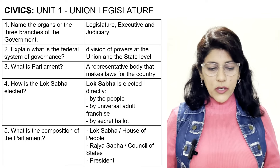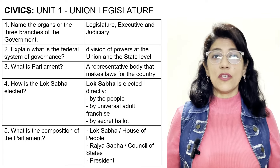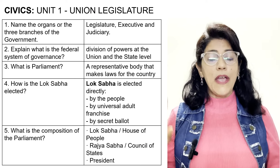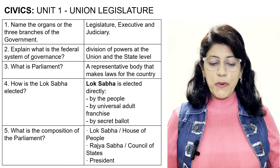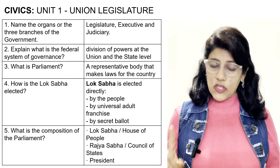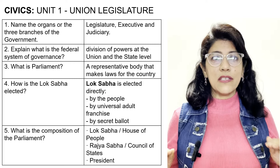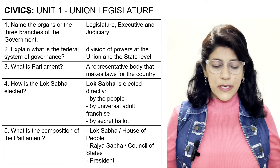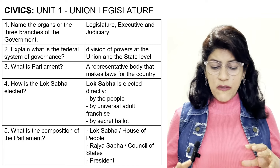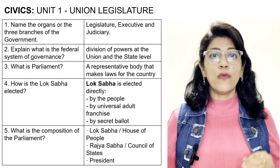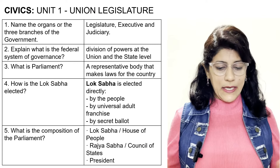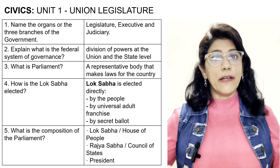First question: name the organs or three branches of the government — Legislature, Executive, and Judiciary. Next, explain the federal system of governance — division of power at the union and the state level, a two-tier system. What is Parliament? A representative body that makes laws for the country. How is the Lok Sabha elected? Lok Sabha is elected directly by the people by universal adult franchise by secret ballot.